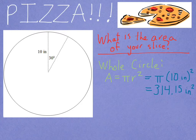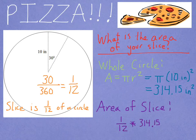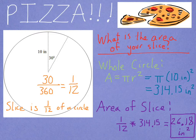That's the area of the whole circle. How do I figure out how much is just my piece of pizza? What fraction of a circle do we have? Well, the entire circle is 360 degrees. So if I do 30 divided by 360 and reduce that fraction, that tells me that slice of pizza is 1 twelfth of a circle. So because that slice is 1 twelfth of a circle, I can figure out the area of the slice as 1 twelfth of the area of the entire pizza. So I'll do 1 twelfth times 314.15, which comes out to be 26.18 inches squared. That's the area of your slice of pizza.